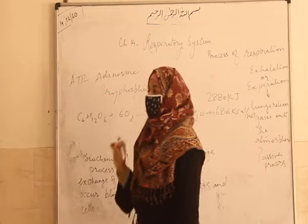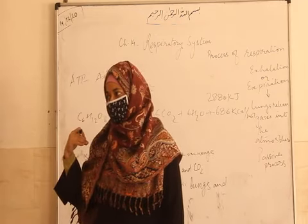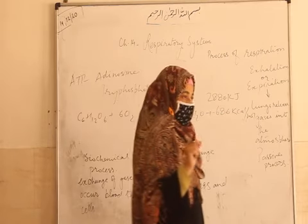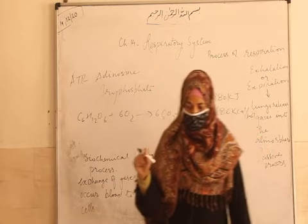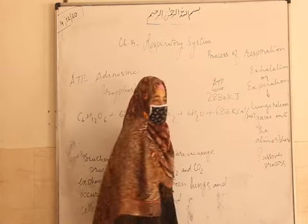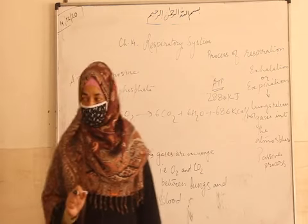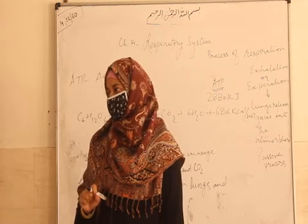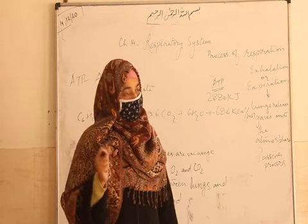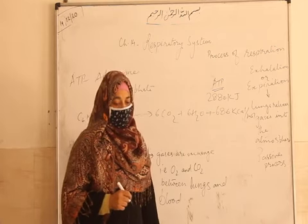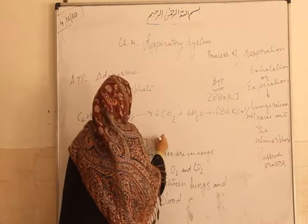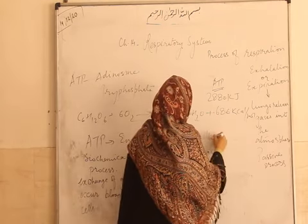In aerobic respiration, 38 molecules of ATP are released, and in anaerobic respiration, 2 molecules of ATP are released. ATP is also called the energy currency of the cell — just like people use currency to purchase things, the cell's currency is ATP.